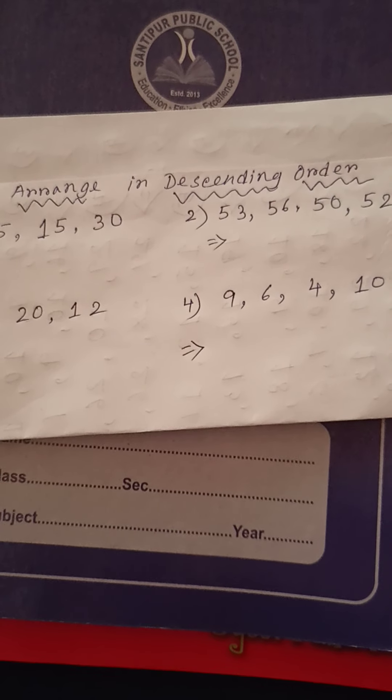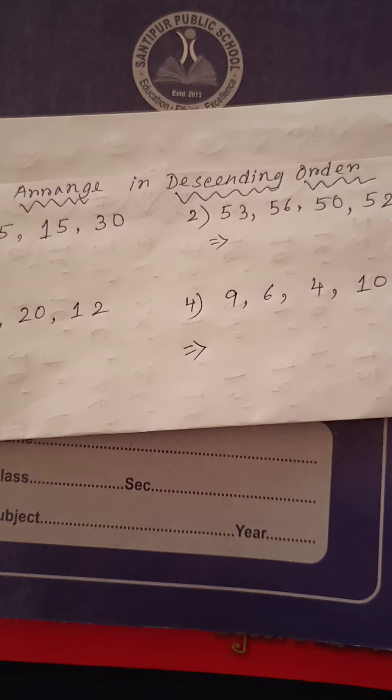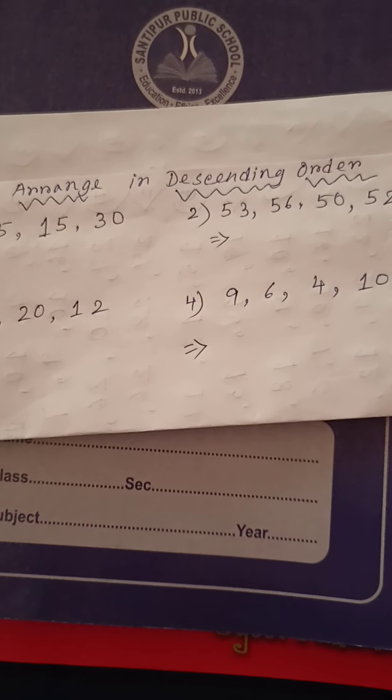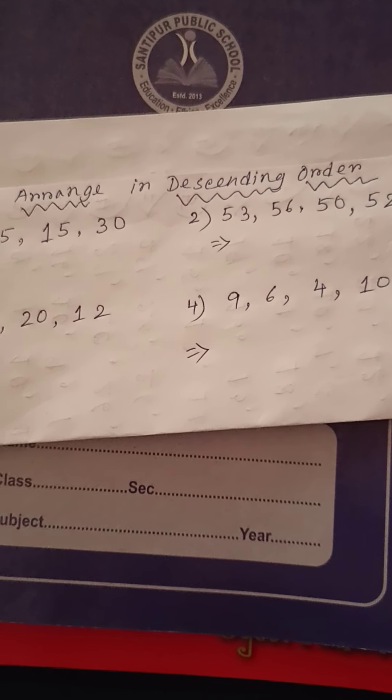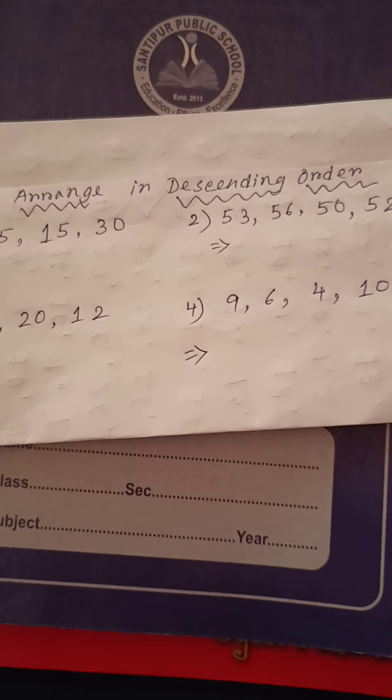So, what do you mean by descending order? Descending order means when we arrange the numbers from biggest to smallest number.